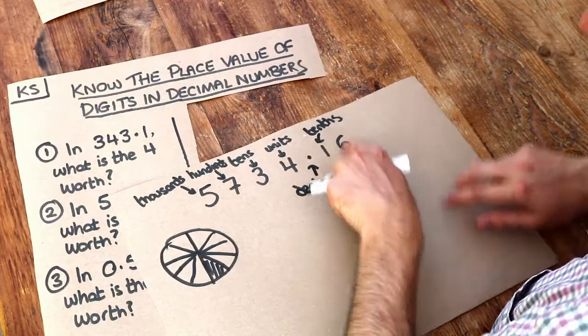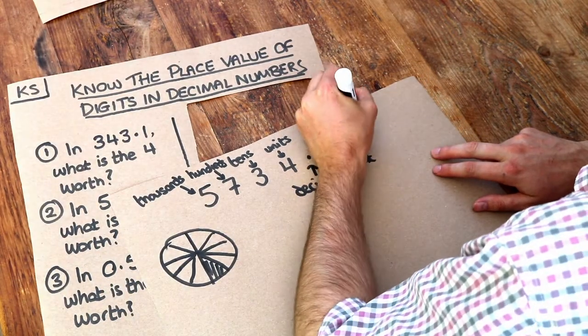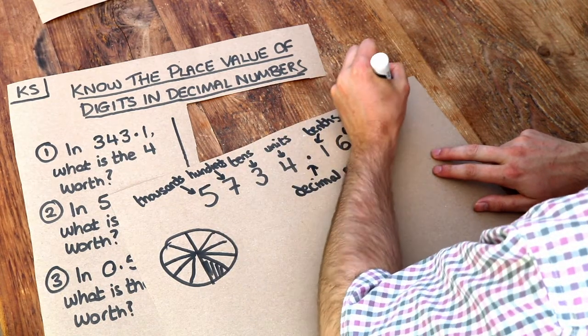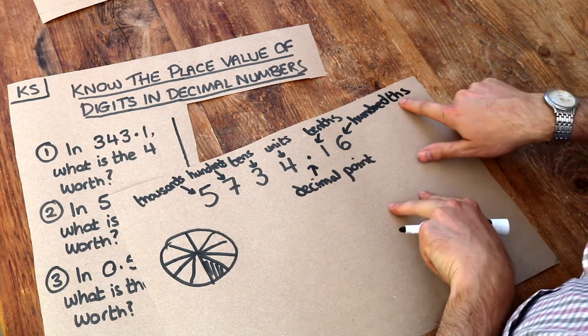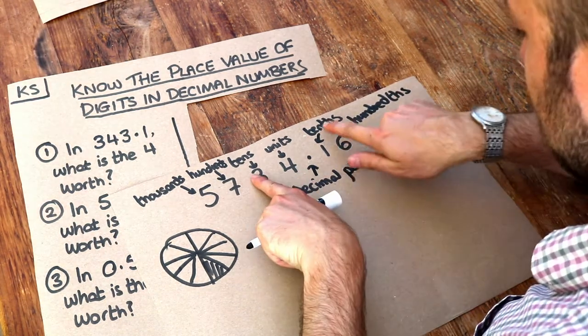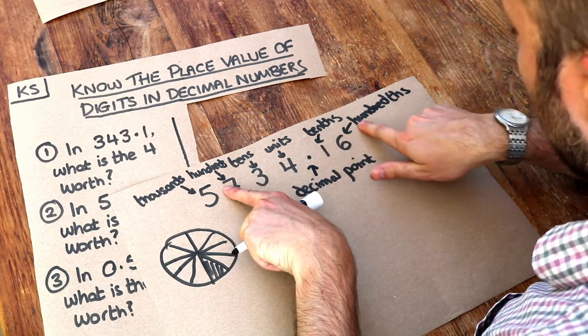This last digit here is the hundredths digit. It sounds like hundreds but it's hundredths—there's an extra T and H. We can divide it up further. You might think that's tens, tenths, hundreds, hundredths.